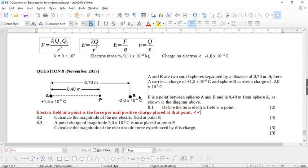It says A and B are two small spheres separated by a distance of 0.7 meters. Sphere A carries a charge of plus 1.5 times 10 to the negative 6 and sphere B carries a charge of minus 2 times 10 to the negative 6. Point P is a point between spheres A and B and is 0.4 meters from sphere A as shown in the diagram.